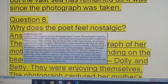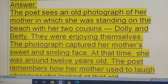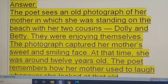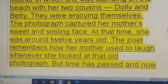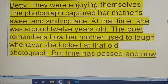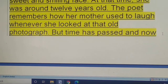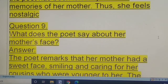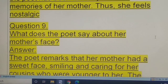Question eight: why does the poet feel nostalgic? The poet sees an old photograph of her mother in which she was standing on the beach with her two cousins Dolly and Betty, enjoying themselves. The photograph captured her mother's sweet and smiling face — at that time she was around 12 years old. The poet remembers how her mother used to laugh whenever she looked at that old photograph, but now the poet is left only with memories of her mother, and thus she feels nostalgic.